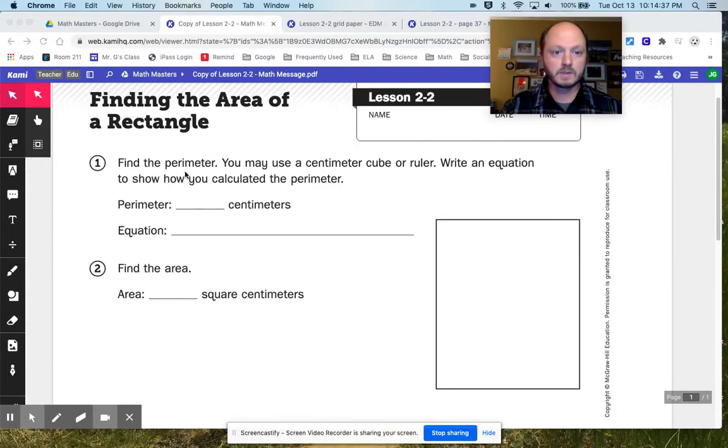So let's take a look at it. It says to find the perimeter. You may use a centimeter cube or a ruler. So you're actually supposed to measure this sheet. Now I'm going to attach this to the lesson, and if you want to print it out and practice that, that's a great idea. But I also want you just to practice, practice, practice being comfortable measuring.